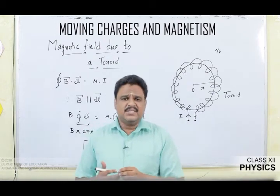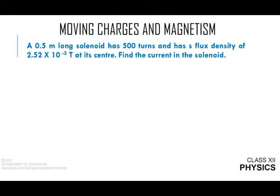With this discussion of Ampere's circuital law, let us get into some numerical and conceptual questions. The first question: a 0.5 meter long solenoid has 500 turns and has a flux density of 2.52 × 10⁻³ Tesla at its center. Find the current in the solenoid.